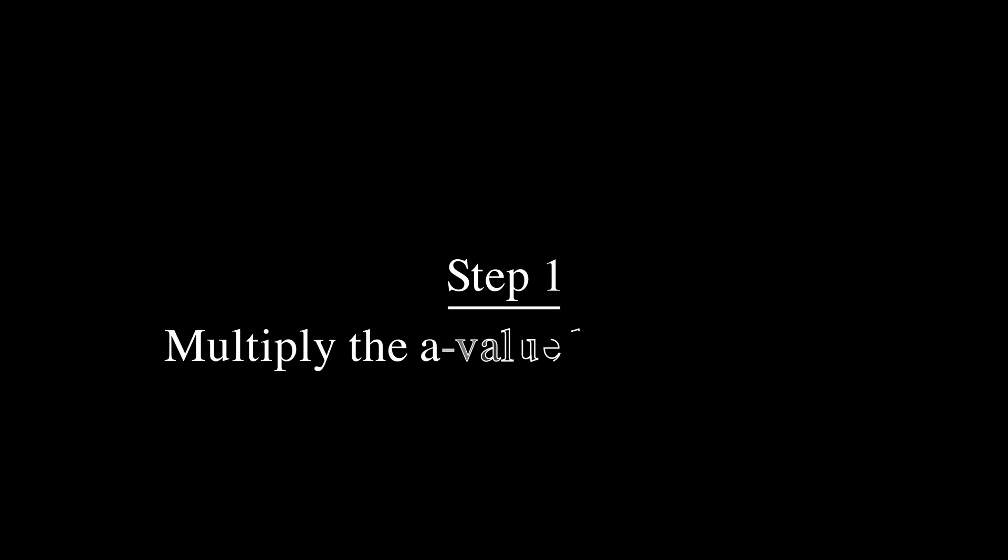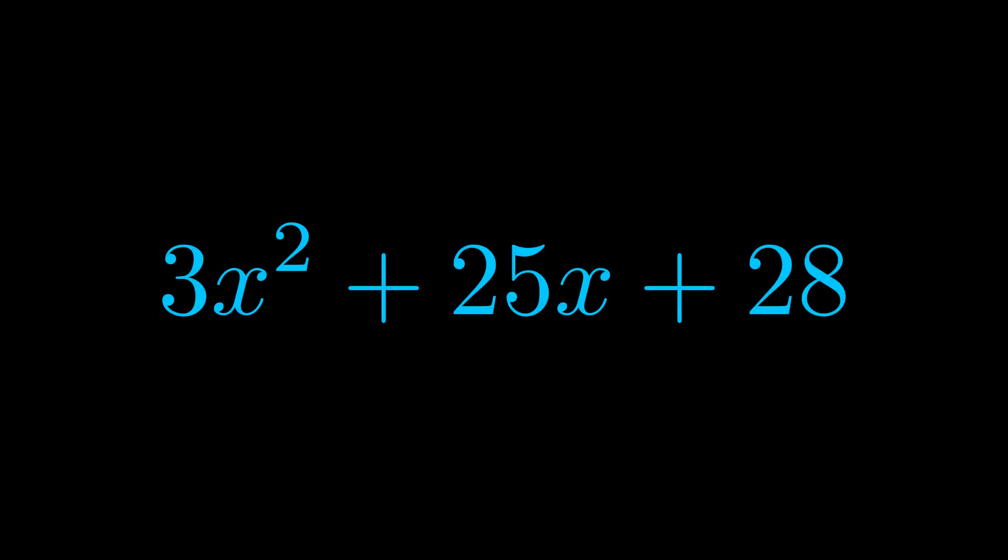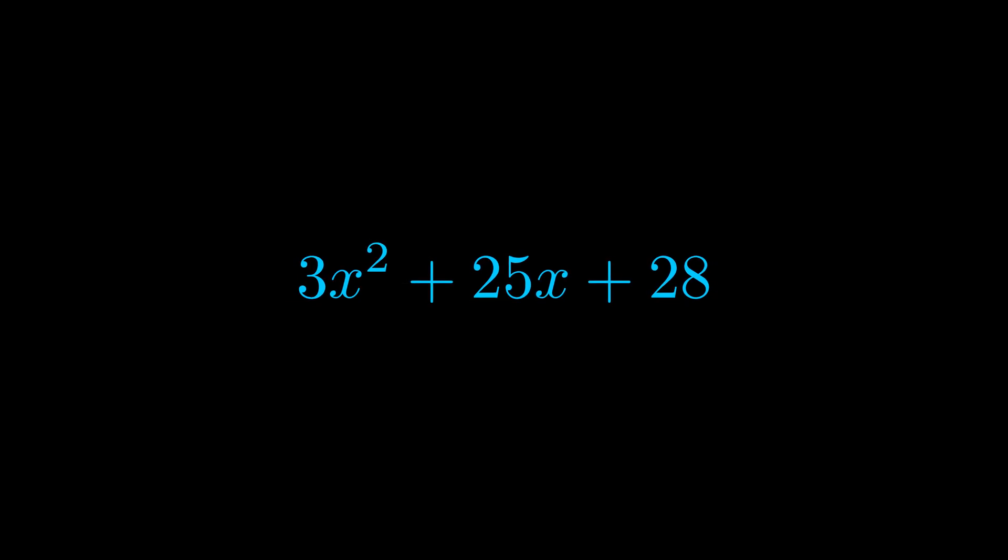Step one when factoring an equation of this form is to multiply the a value by the c value. Here we can see that our a value is the coefficient on the x squared term and our c value is the constant term.